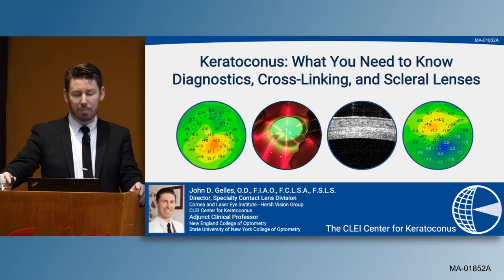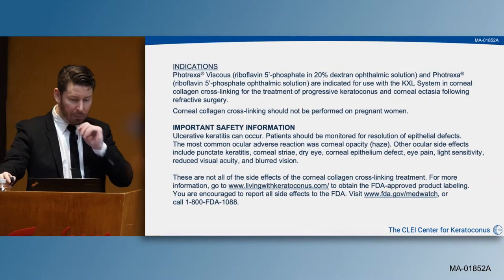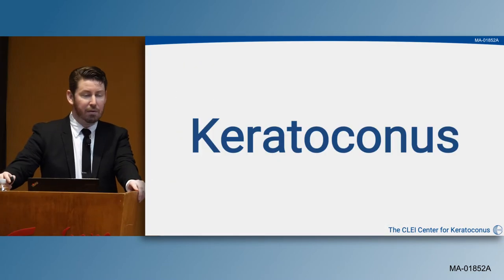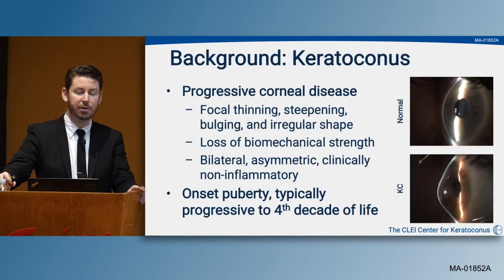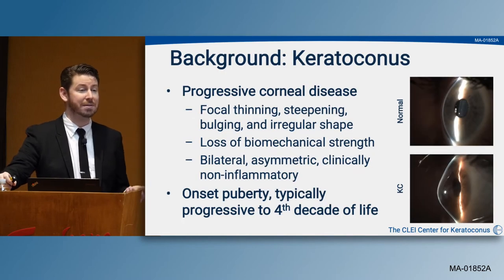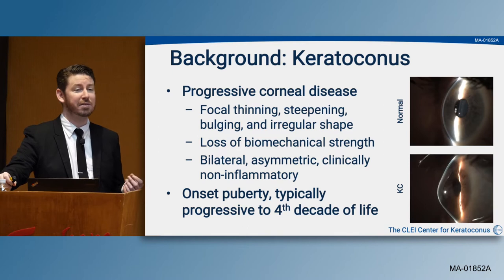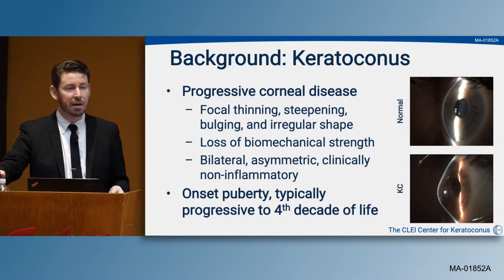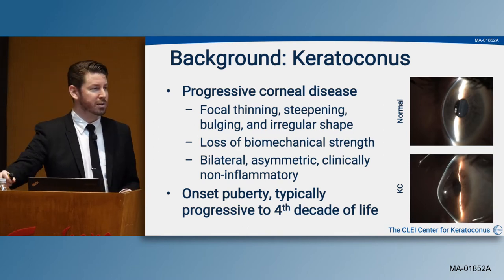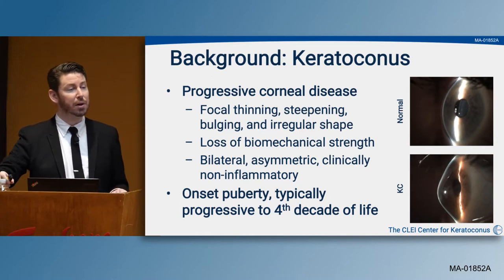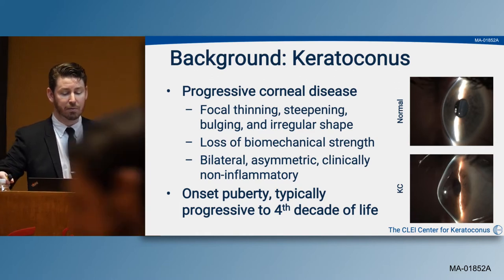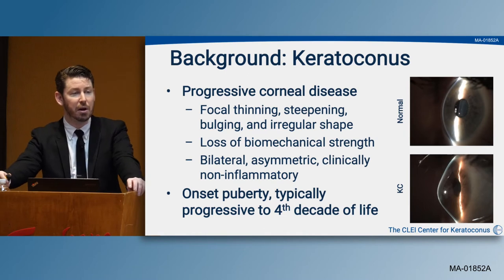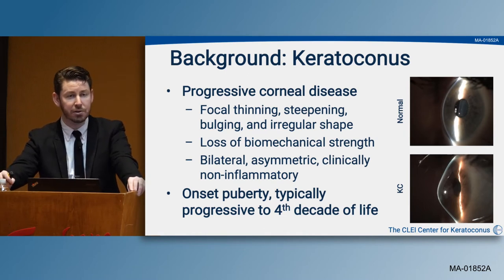Keratoconus is a progressive corneal disease characterized by a loss of biomechanical strength. This loss of strength results in focal thinning, steepening, and irregular corneal topography. It's a bilateral, asymmetric, and clinically non-inflammatory disease that typically begins in puberty until about the fourth decade of life, where it tends to stop progressing.